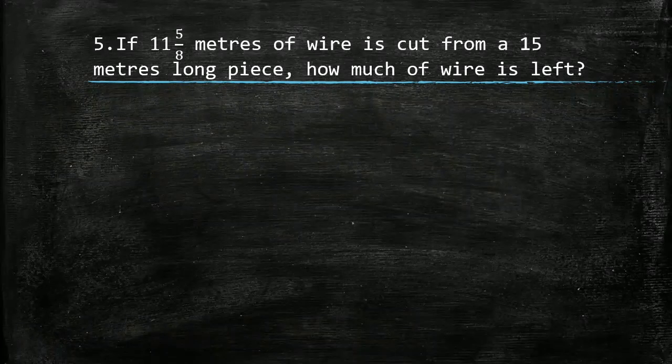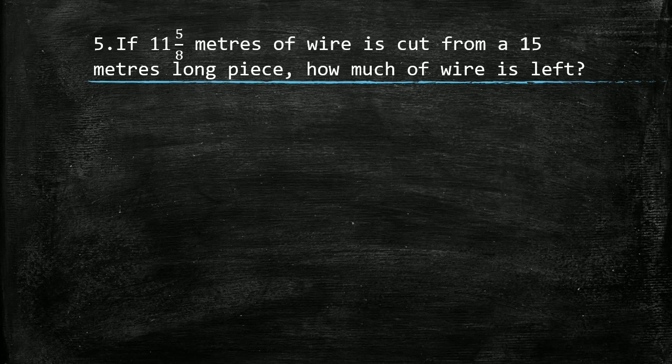Next question: if 11 whole 5 upon 8 meters of wire is cut from a 15 meters long piece, how much wire is left? Total length of wire is 15 meters. Out of this 15 meter long wire, 11 whole 5 upon 8 meters of wire is cut. We have to find out how much wire is left, so we have to subtract 11 whole 5 by 8 meters from 15 meters.